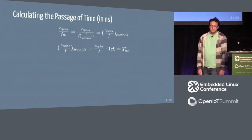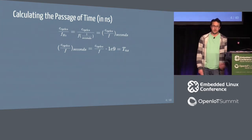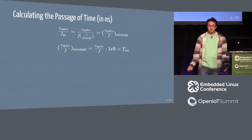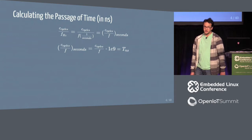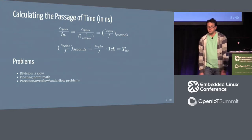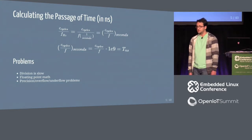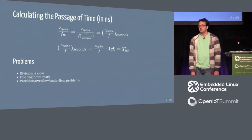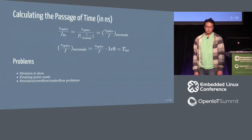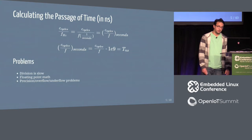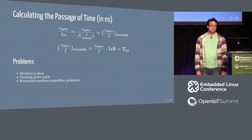To calculate time, the math is basically: how many cycles you have divided by the frequency of the counter gives you how many seconds it's been, because frequency is in hertz. If you want to translate that into nanoseconds, just follow that equation. But on the kernel there are problems — division is slow, and we're doing this constantly when measuring latencies. Division takes a long time, it requires floating point, and you might have underflow or overflow problems.